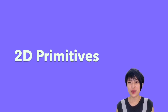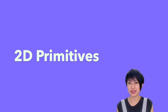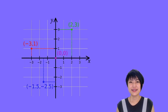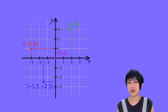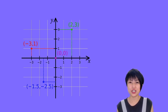In this tutorial, we are going to go over how to put some 2D primitive shapes into p5.js. Before getting into drawing some 2D primitive shapes, we have to first learn about a concept called the Cartesian coordinate system.